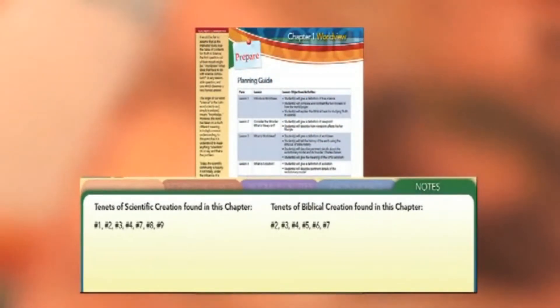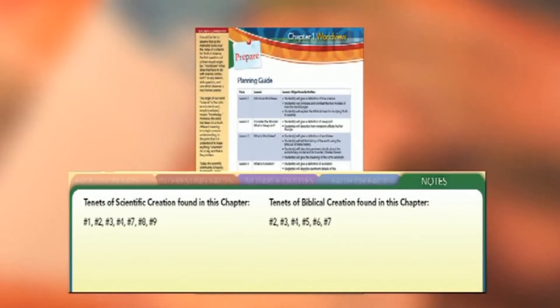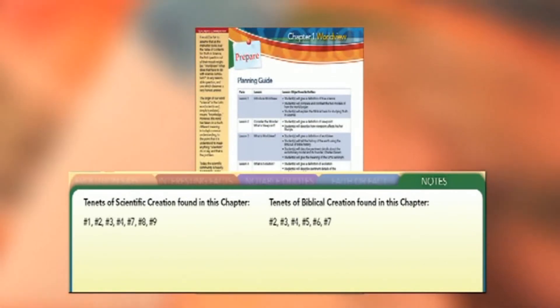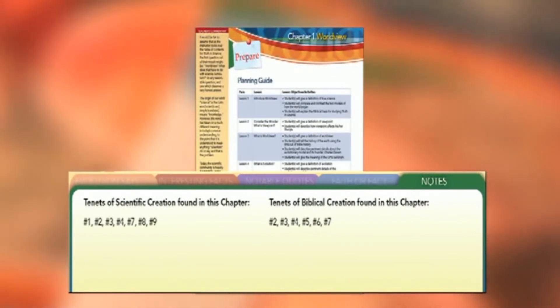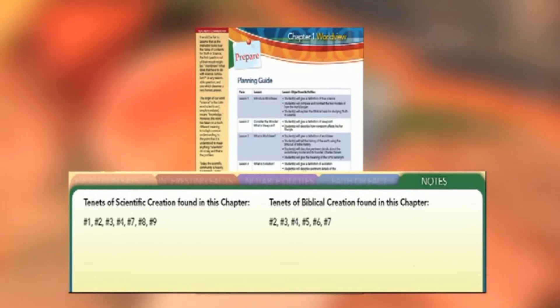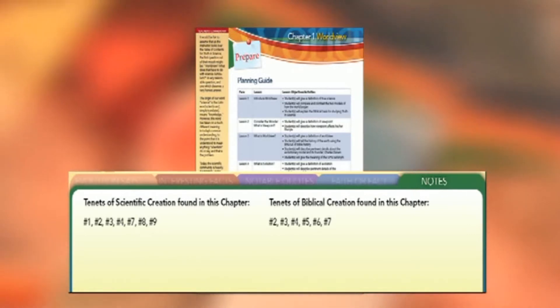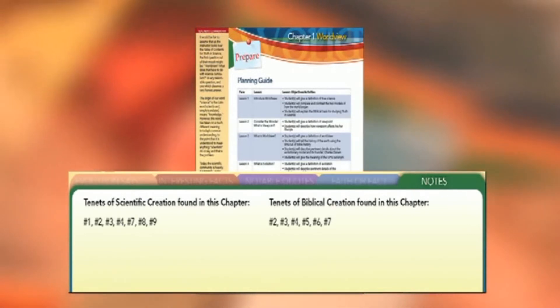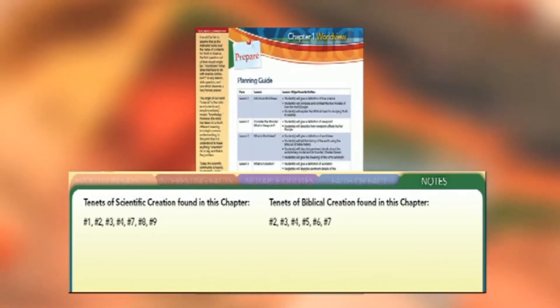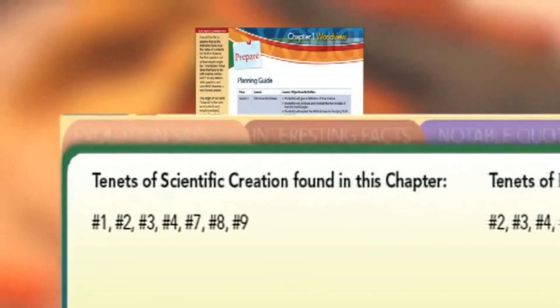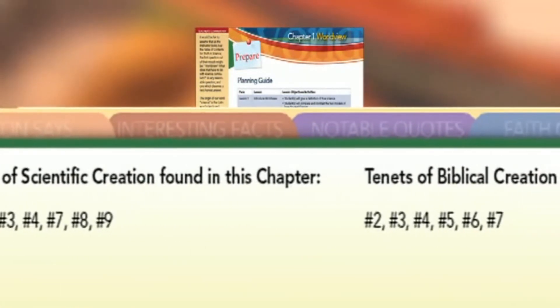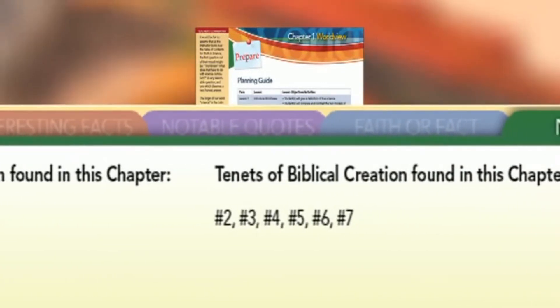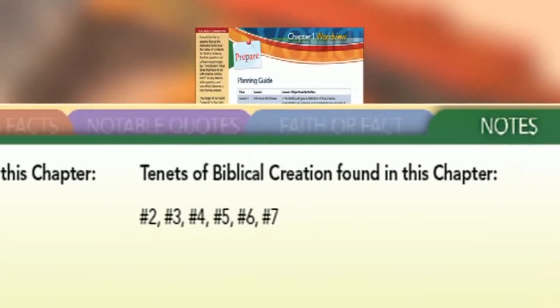The tab material at the bottom of the page has been included to further enhance your understanding of the general lesson material and to provide you with pertinent and often little-known facts about the subject matter. This section has been formatted to look like an index card file, with the individual subjects being: Evolution Says, Interesting Facts, Notable Quotes, Faith or Fact, and a section for your own notes. Let's look at these sections one at a time.